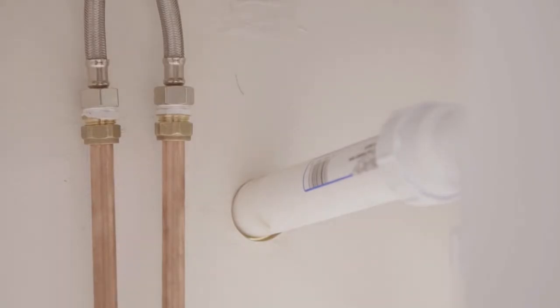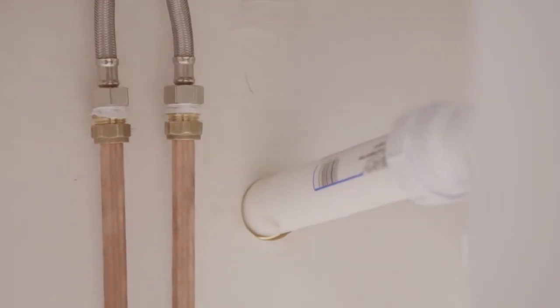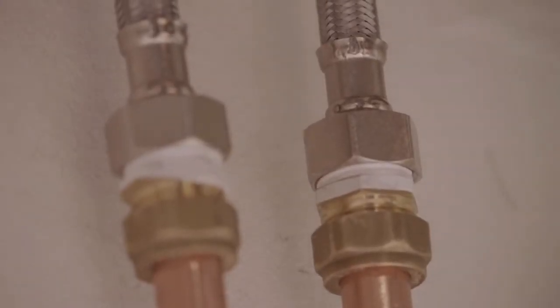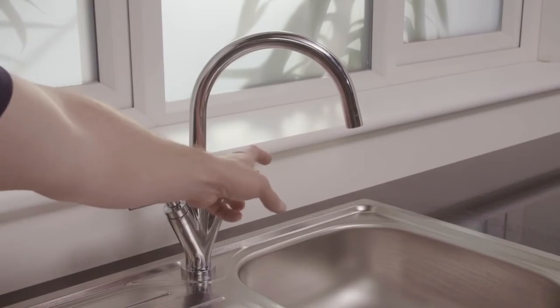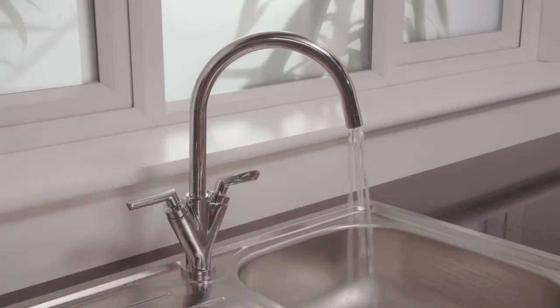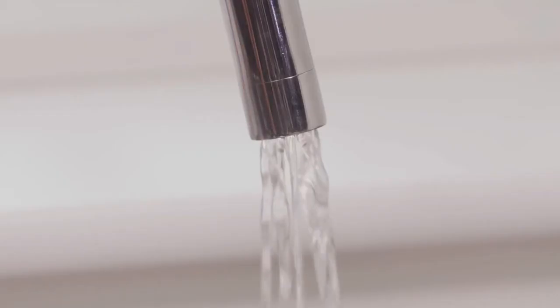If water seeps out of the threading on the pipe, then make sure the unit is tightly screwed in, or you might need more PTFE tape. However, the likelihood is it will work perfectly. Now turn on your new tap. It will probably gurgle a bit as you release the air bubbles, but your new tap is now ready to use.